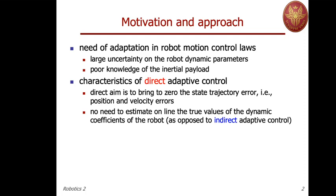This is called direct adaptive control because there is no actual need to estimate during the transient behavior the true values of the dynamic coefficients. There are other classes of adaptive controller called indirect, which include online estimation of these parameters. In that case you obtain better results, but you require convergence of the estimation for convergence of the tracking control, while direct adaptive control directly aims at reducing to zero the state trajectory error.